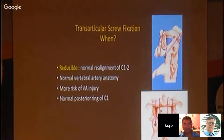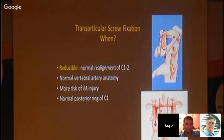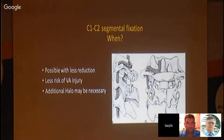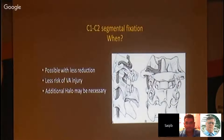Another option in os odontoideum is transarticular fixation. If it is reducible and the vertebral artery anatomy is acceptable, you can do it, although there is generally more risk for vertebral artery injury. Another option is C1-C2 segmental fixation, which carries less risk of vertebral artery injury. With segmental fixation for os odontoideum, you can apply reduction forces — enter the atlanto-axial joint, perform some preparation, and place forces to bring the C1 lateral masses back into position.